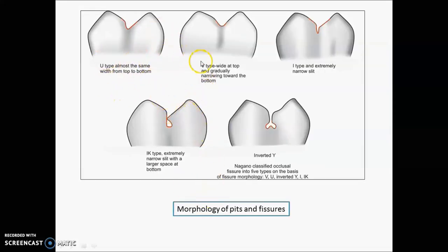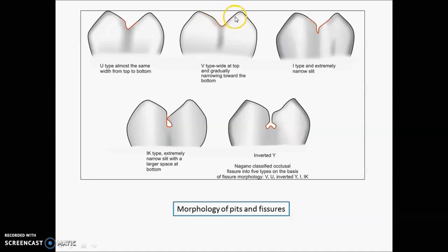Now we will talk about the morphology of pit and fissure. There are around five kinds according to the Nagano classification: V type — wide at the top, gradually narrowing at the bottom; U type — same width from top to bottom; I type — extremely narrow slit; IK type — narrow slit with a large space at the bottom; and inverted Y type — slightly wider than IK at the top with two large areas at the bottom. U and V types are self-cleansing; I, IK, and inverted Y types are more prone to caries.